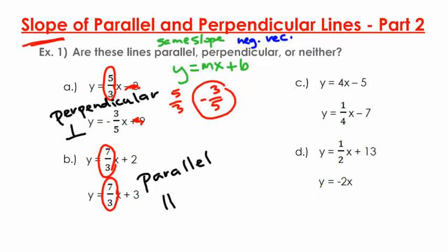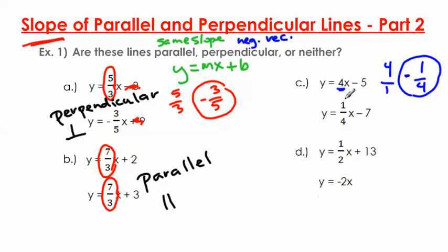Moving on to c: y equals 4x minus 5, and y equals 1 over 4x minus 7. Are these slopes the same? No, so they're not parallel. The slope of the first one is 4. What's the negative reciprocal of 4? I write it as 4 over 1, and the reciprocal is 1 over 4, then switch the sign to get negative 1 over 4. Is negative 1 over 4 the same as the second slope, which is positive 1 over 4? No — one is negative and one is positive. So this is going to be neither.